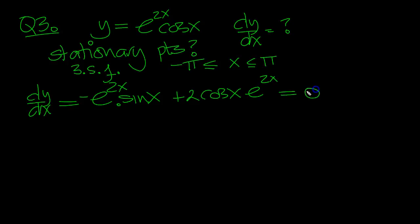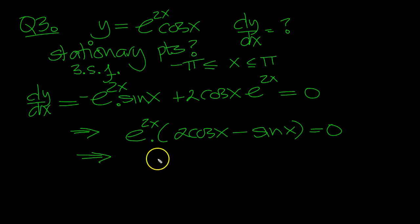Okay, let it equal 0. So that implies e to the 2x times 2 cos x minus sin x equals 0. So that implies that doesn't equal 0, so this must equal 0.